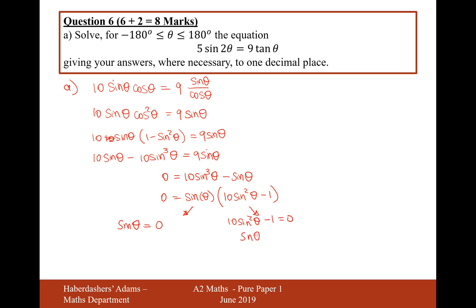Therefore sin θ is going to be 1 over root 10 plus or minus. Plus or minus 1 over root 10. So the solutions for this one are going to be θ equals minus 180, 0, and 180. Those are the values when sin θ equals 0.